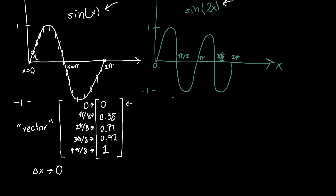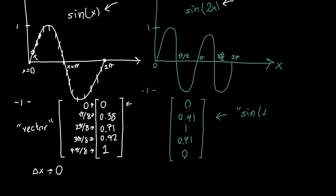We can do exactly the same thing for sine of 2x. We calculate its value at x = 0: that's also 0. At π/8, that's 0.71. At 2π/8, that's 1. At 3π/8, that's 0.71 again. At 4π/8 = π/2, that's 0. So we've got a vector for sine of 2x and a vector for sine of x. You might imagine we could just take the dot product of these two vectors — point-wise multiplication of all values, and then sum them up.